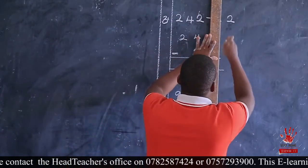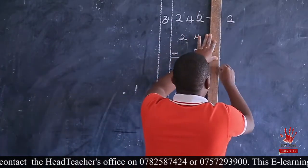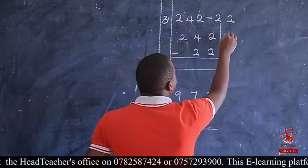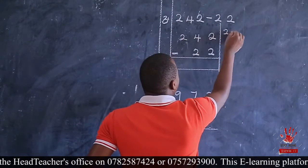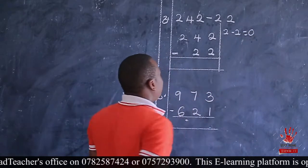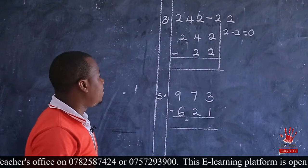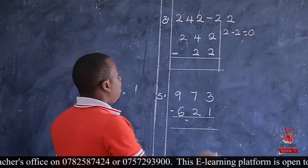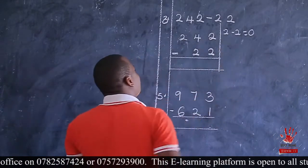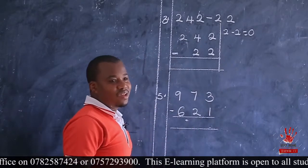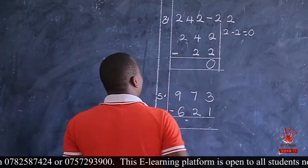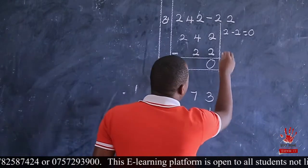Then after arranging, we put that part over. We have two take away two equals zero. Two take away two is zero. For those who draw balls, you will draw two and remove two, so you get zero. I come and write zero here, then go to the next one.